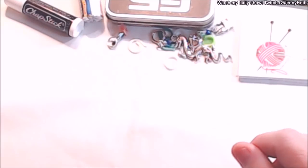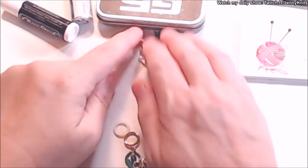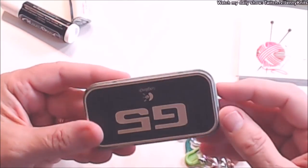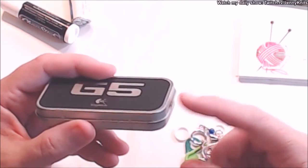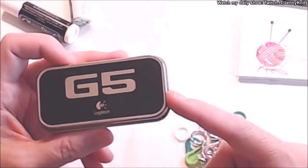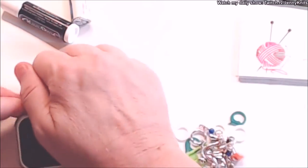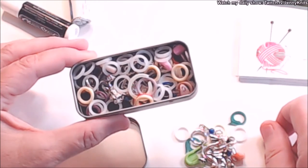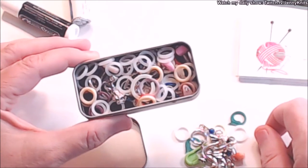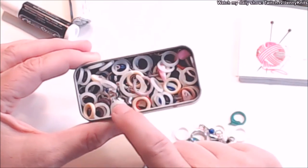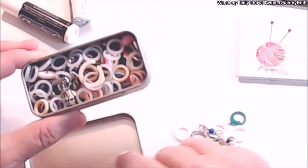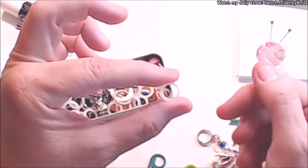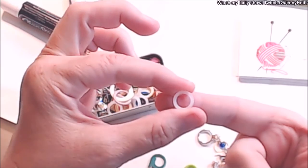Stitch markers - gotta have them, gotta have lots of them. This is a little tin that I got from a mouse that had little weights inside that you could use to balance the mouse. So I got rid of the weights and it's a nice size tin that I could use for my stitch markers. I have all kinds of stitch markers in here. Surprisingly enough I lose stitch markers, I don't know what it is, but about every six months or so I have to go buy another pack of stitch markers because I've lost them.